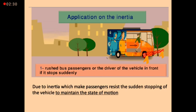We spoke before about how an object has two states: a static or rest state, or a motion state. Here the passenger is in a motion state inside the bus. But when the bus suddenly stopped, a force of inertia appeared in the form of rushing the passenger forward — to resist the sudden change in the passenger's state.